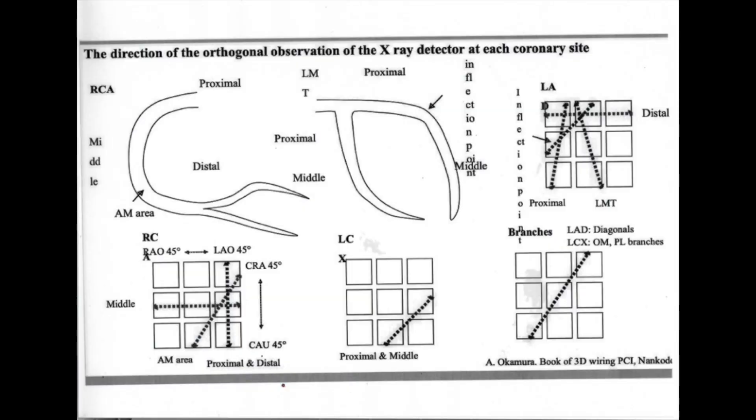These will be the ideal views. In Okamura-sensei's textbook, all the views are listed and you can refer to that as a reference. These already account for most CTOs because they occur in the RCA and LAD, where the distal caps are. When we approach the distal cap, we need to take a retrograde angiogram so we can clearly see where the distal cap is in these angles — then we're ready for our wiring.